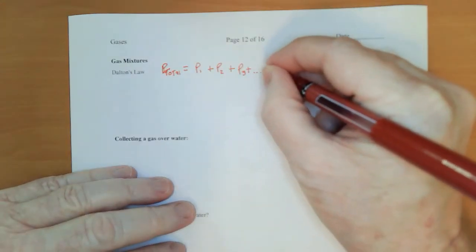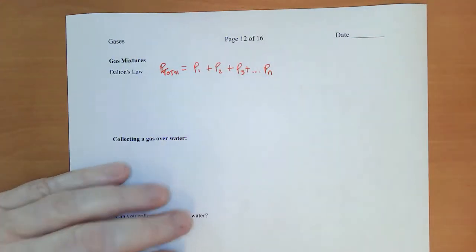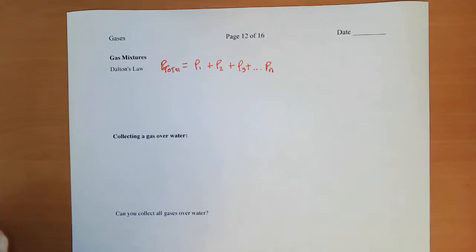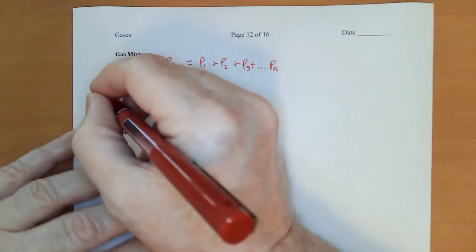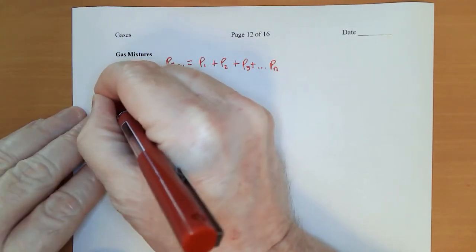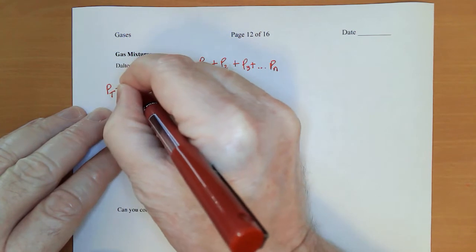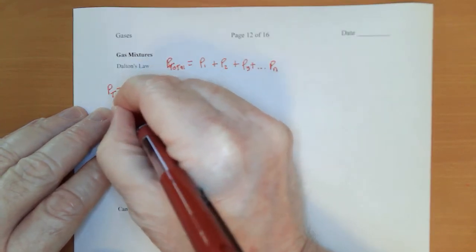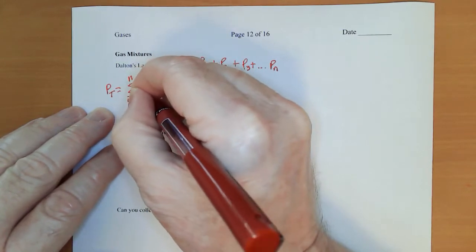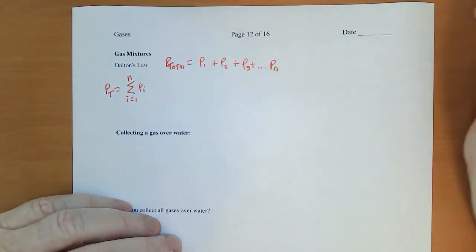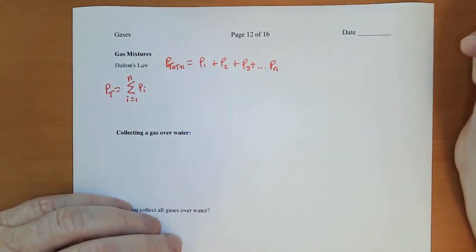Mathematically, there's a fancy way of writing this: P_total equals the sum from i equal one to n of P sub i. You may have seen that in your math classes.